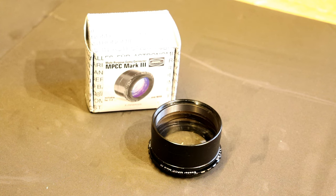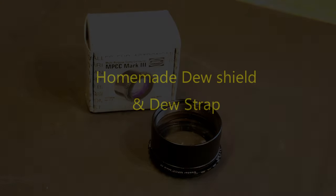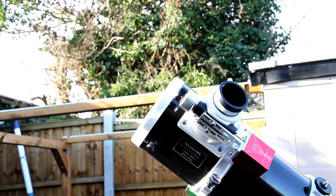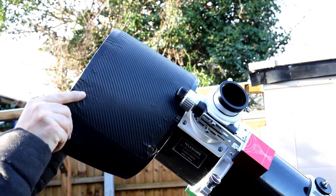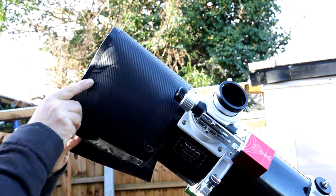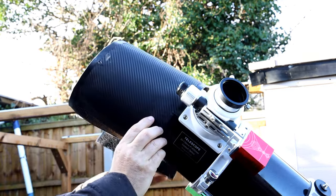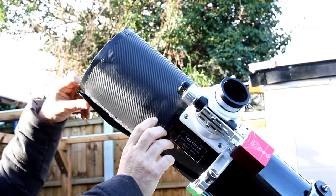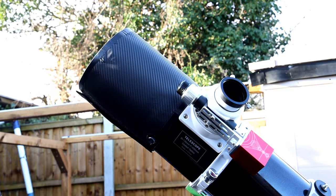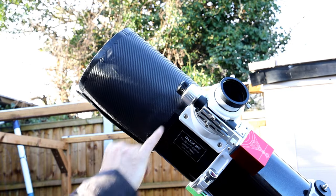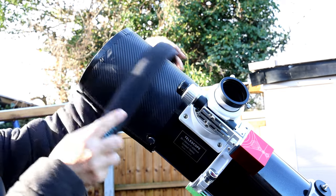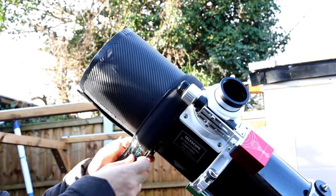A modification I made for this scope was a dew shield. I just made this out of some foam card and a vinyl wrap with some velcro strips that I just ordered off of Amazon. Not expensive and quite easy to make. I just put a dew strap over the end of the scope just to give a heat source there and also help secure the shield in place.